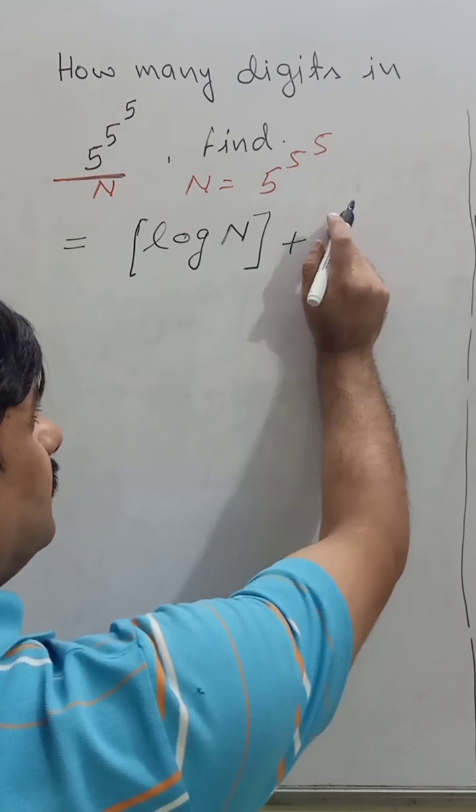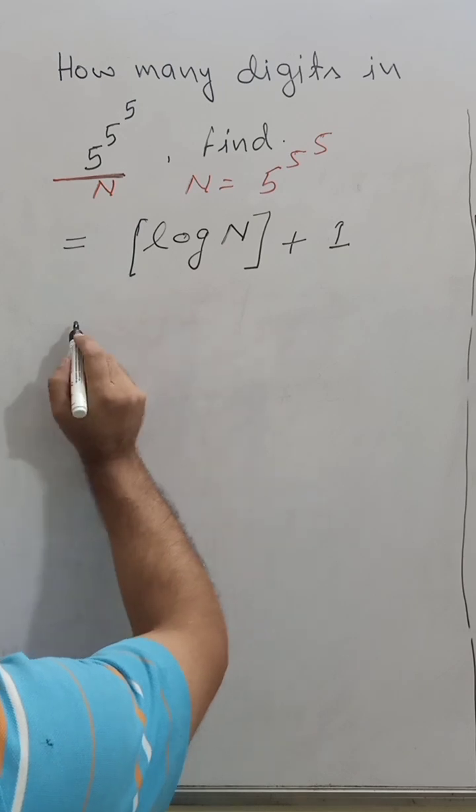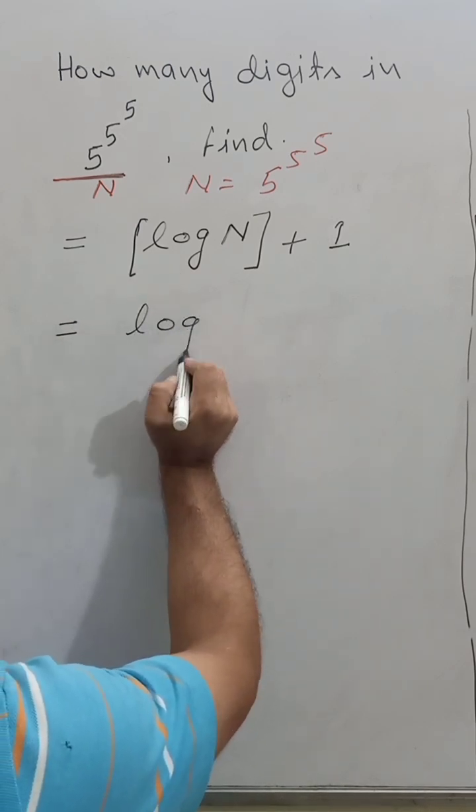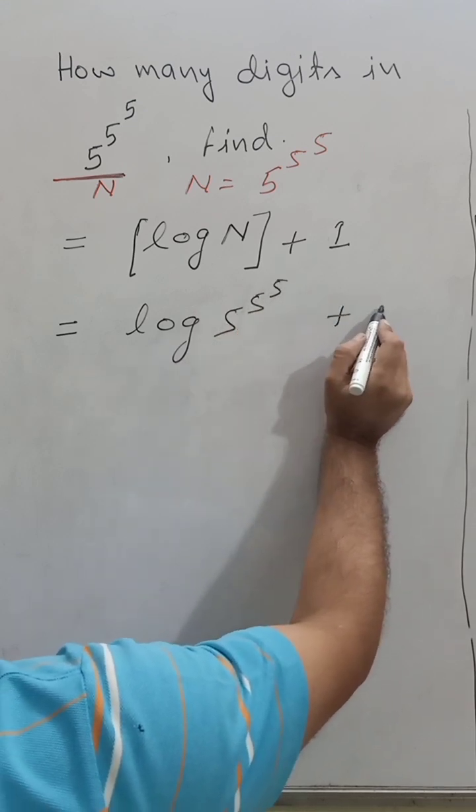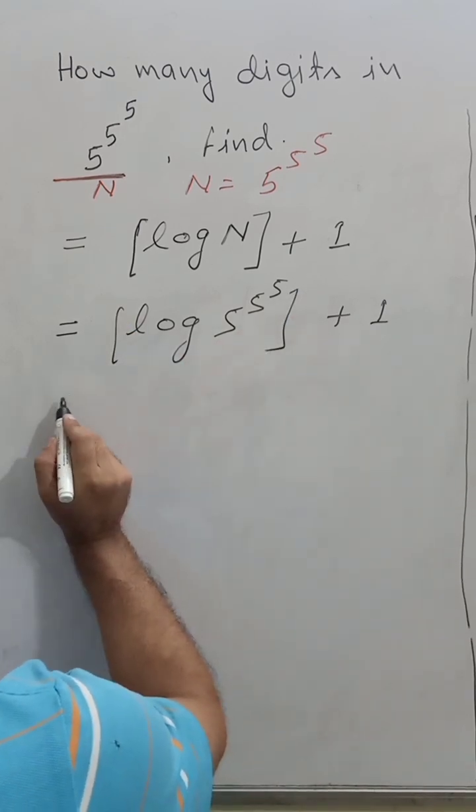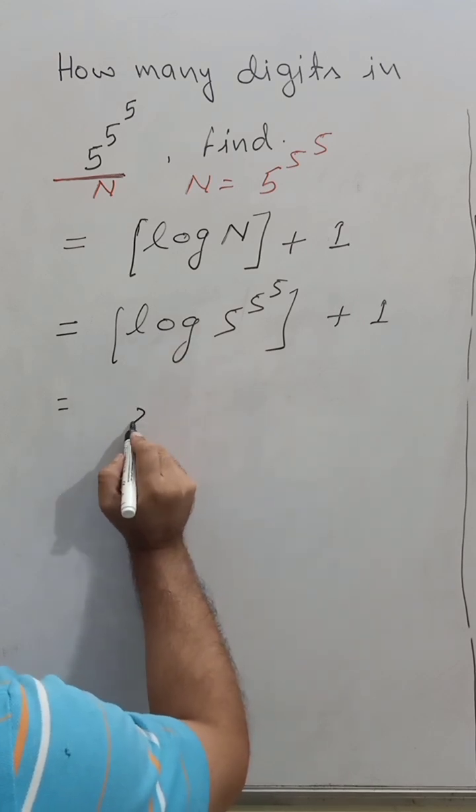Plus 1 also. So let's see - log of 5 to the power 5 to the power 5, plus 1, in GIF, equals 5 to the power 5 over here.